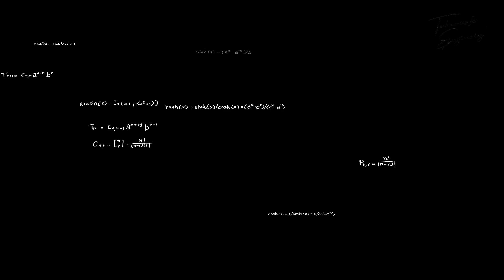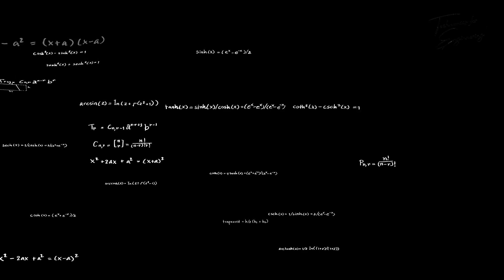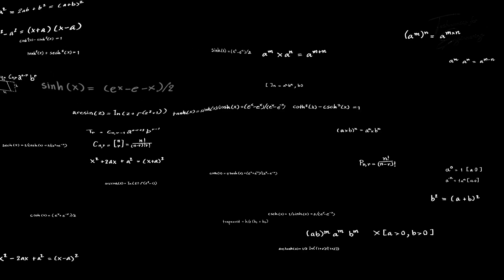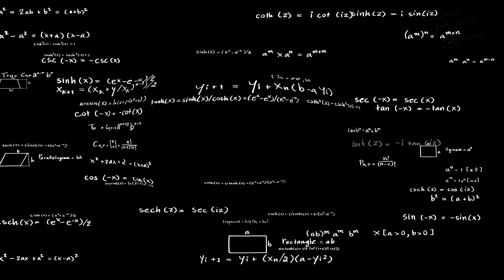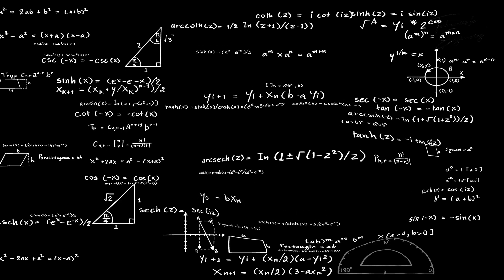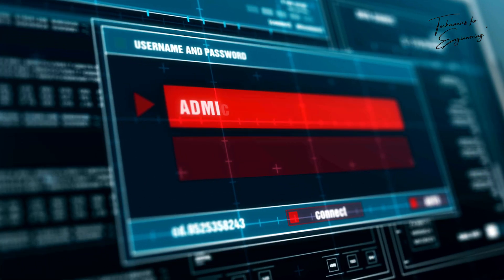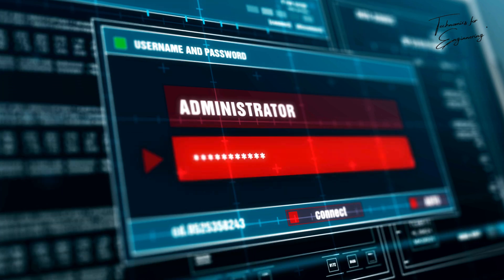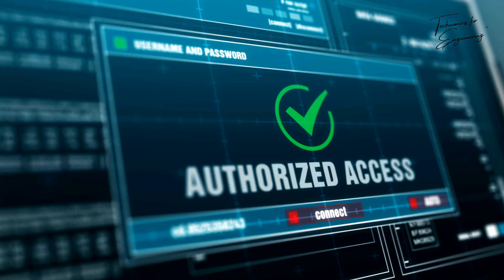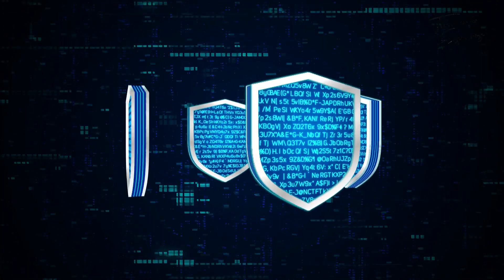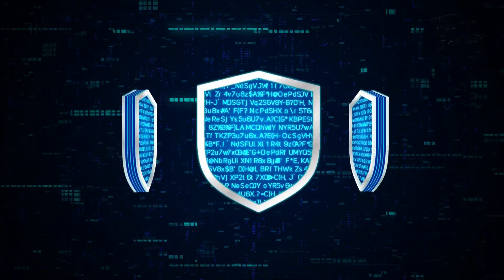Our digital world relies heavily on cryptographic algorithms that are extremely difficult to break with today's computers. A fully realised quantum computer could demolish current public-key cryptography by factoring large numbers or solving discrete logarithm problems rapidly. This scenario, known as the quantum apocalypse, motivates the search for quantum-resistant algorithms. At the same time, quantum cryptography — like quantum key distribution (QKD) — offers perfect security based on quantum laws. Any eavesdropper would inevitably disturb the system, alerting the communicators.